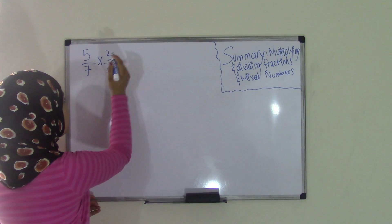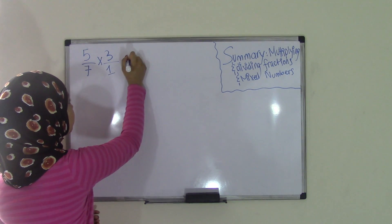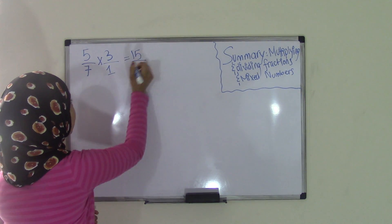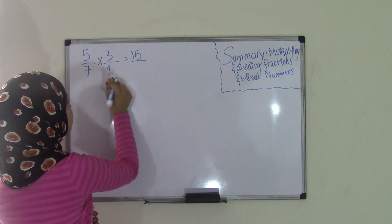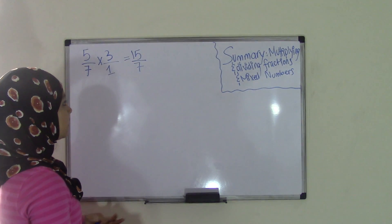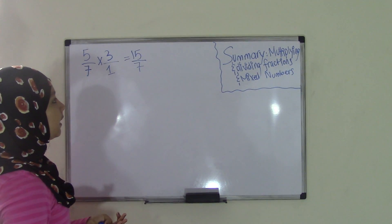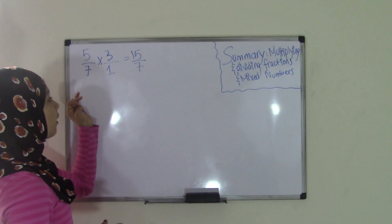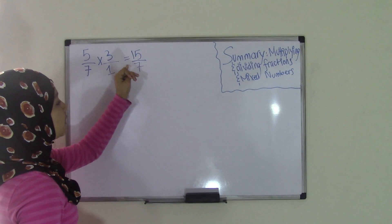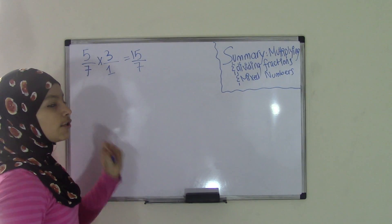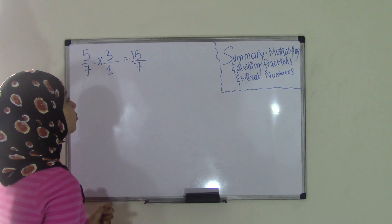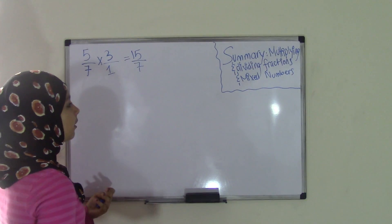So 5 times 3 is 15, and 7 times 1 is 7. Our answer is 15 over 7, which is an improper fraction. So we need to change this into a mixed number.